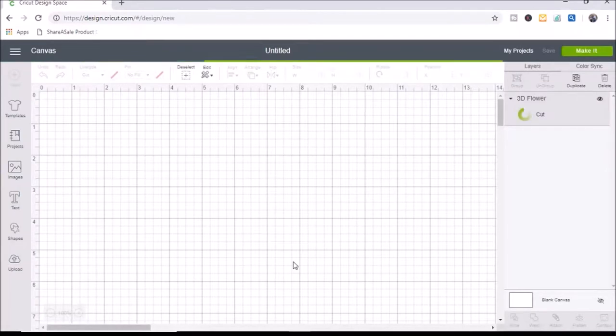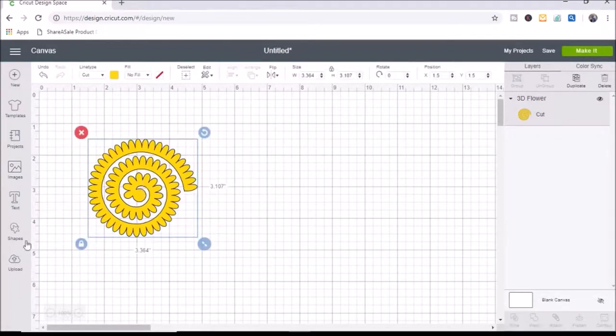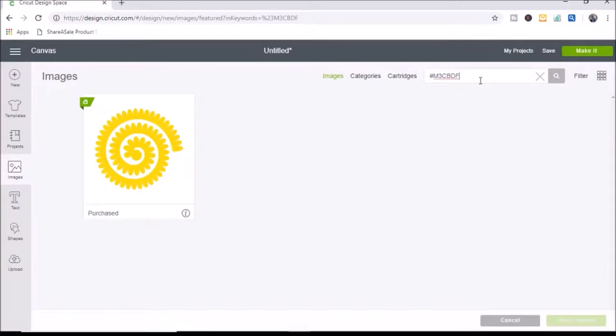Here's my first one. I am going to select it and hit insert images. Then I'm going to upload three more so I'm going to go back to images. I'll do the same thing. I'm just going to type in the codes for the next three flower templates.